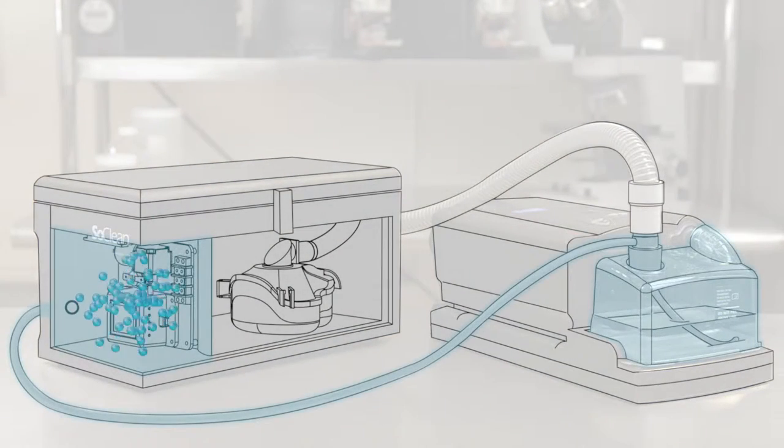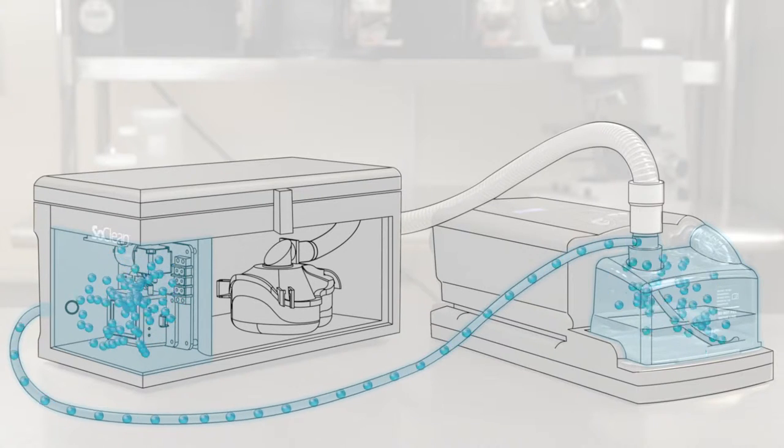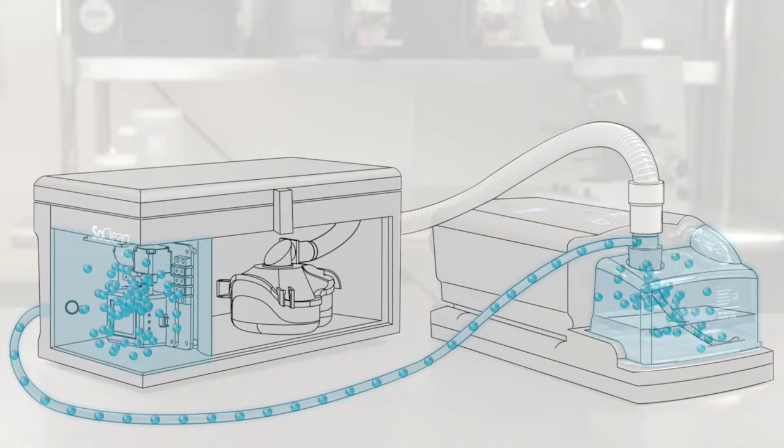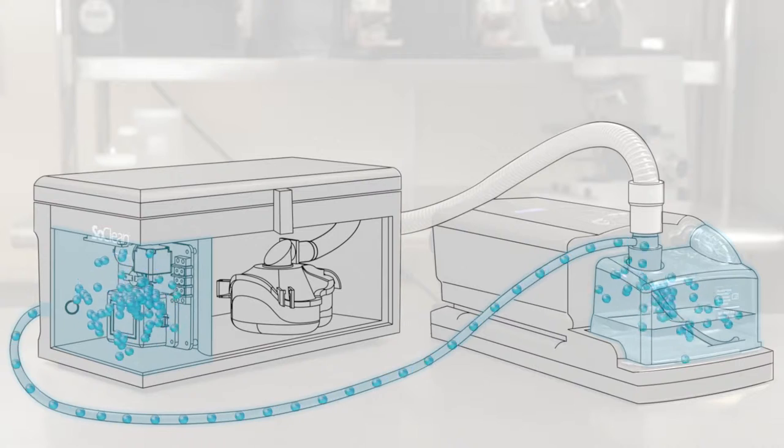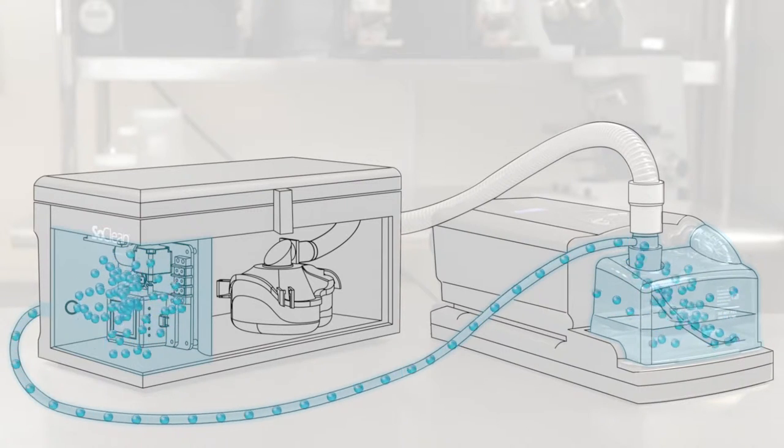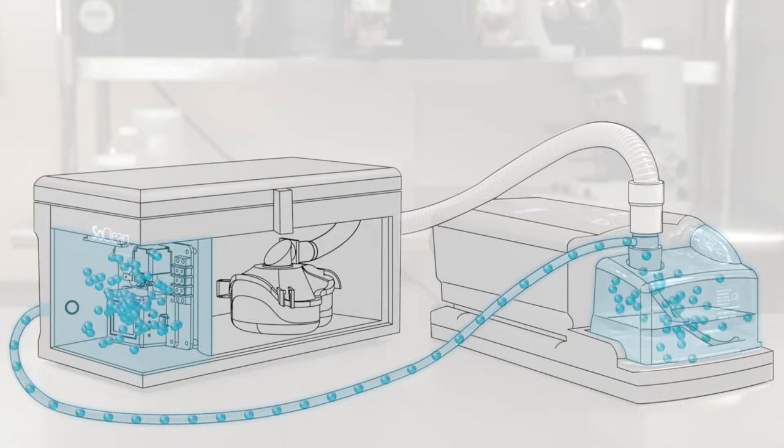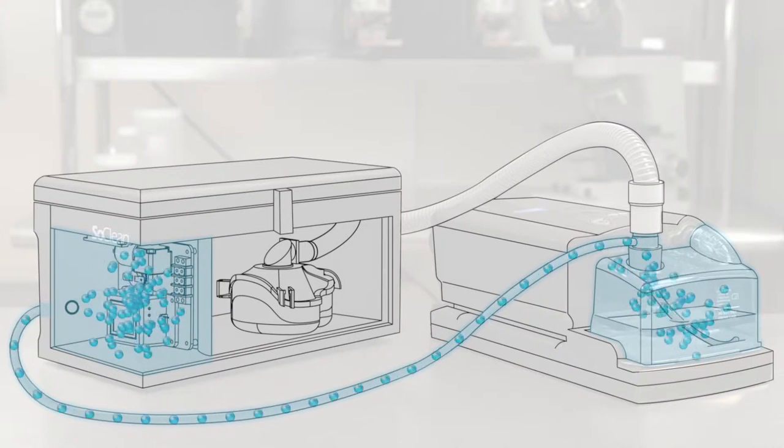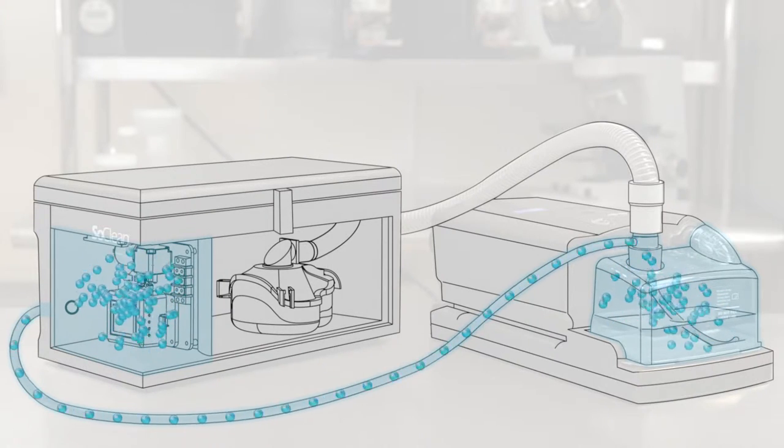First, the SoClean generates and pumps the activated oxygen through the supply tube and into your humidifier reservoir. As it bubbles through your water, it sanitizes not only the water, but the inner walls of your reservoir as well, reaching every corner and killing any germs or algae that might be present in this moist environment.